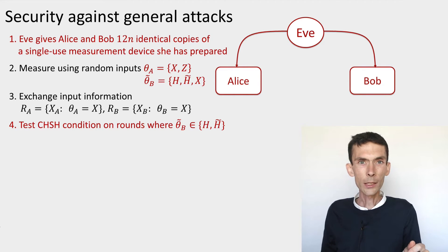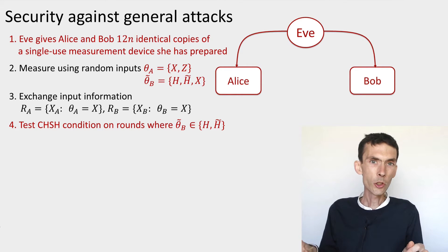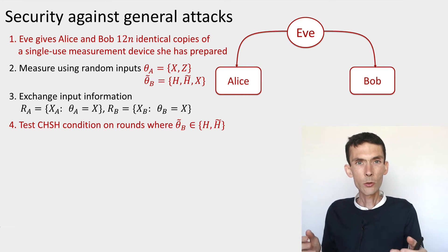What's important, as usual, is that Eve gets to prepare an arbitrary tripartite device A, B, E. She keeps E, gives A and B to Alice and Bob, who use it sequentially, providing their basis choices, collecting outputs.